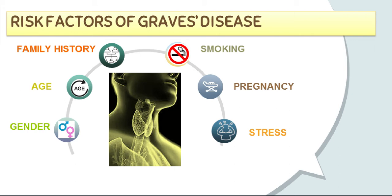Scientists cannot predict who will develop Graves' disease. However, factors such as age, sex, heredity, and emotional and environmental stress are likely involved. Graves' disease usually occurs in people younger than age 40 and is 7 to 8 times more common in women than men. Women are most often affected between ages 30 and 60, and a person's chance of developing Graves' disease increases if other family members have the disease. Researchers have not been able to find a specific gene that causes the disease to be passed from parent to child.